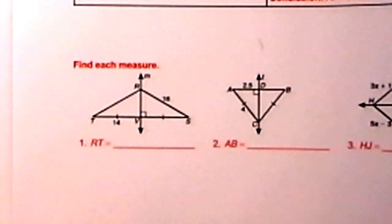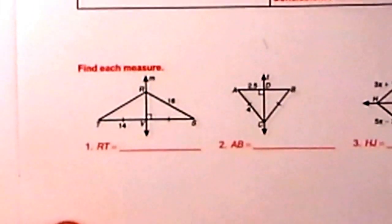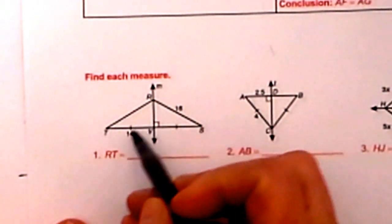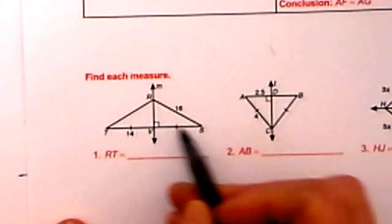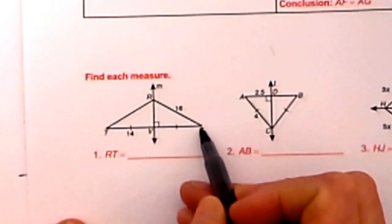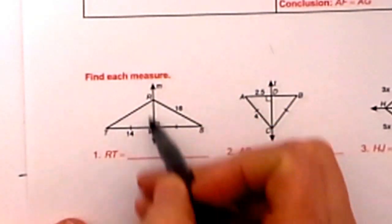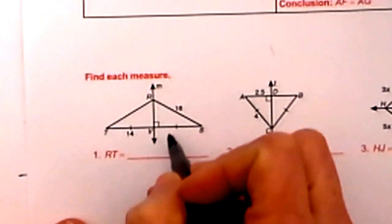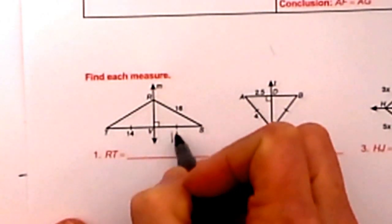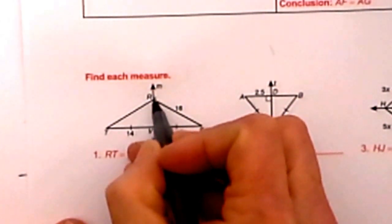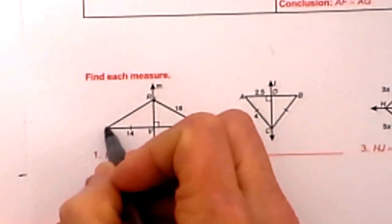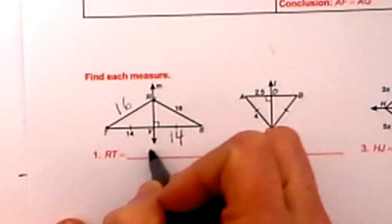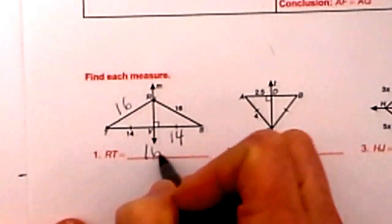Now let's apply that perpendicular bisector theorem. Here's our first diagram. We have TS as our segment, and we've got RV which is a perpendicular bisector. So TV, the segment, is 14, so we know this one is 14. R would then be the same distance from S as it is from T, so RT is also 16. So that's our answer here.